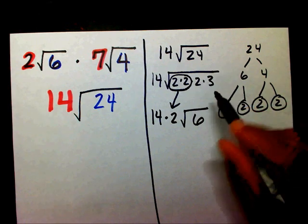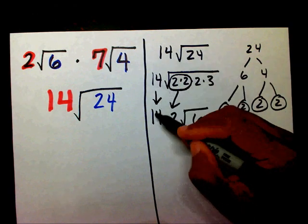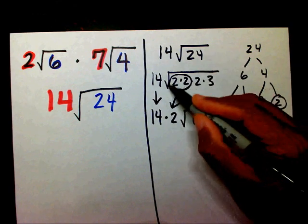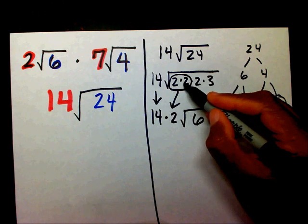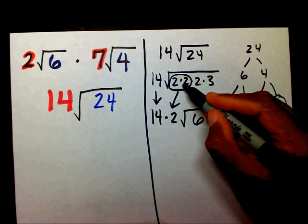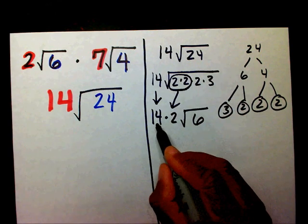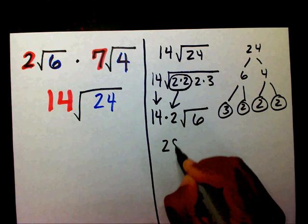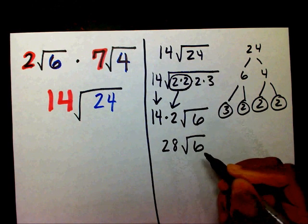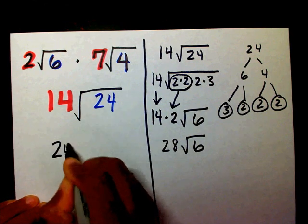Again, I brought my 14 down. It was already on the outside of the radical symbol. I multiply. I know that 2 times 2 is 4. And radical 4 is a perfect square. Square root of 4 is 2. So, I'm going to bring this down. 14 times 2 is 28 radical 6. So, I can simplify this down to 28 radical 6.